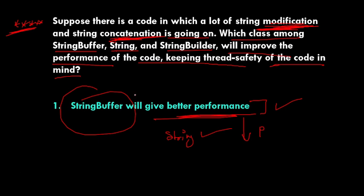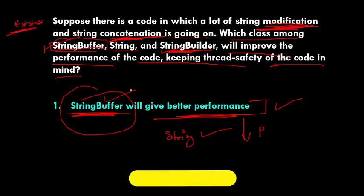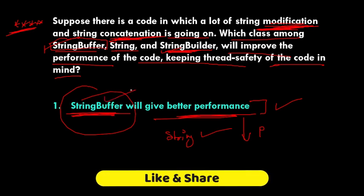StringBuilder is not immutable, but it is not thread-safe — multiple threads can access it at the same time. Coming to StringBuffer: it is the one option that makes your performance faster while also being thread-safe. So StringBuffer is the correct answer when both performance and thread safety are required.